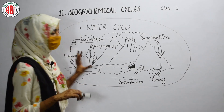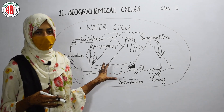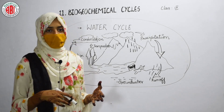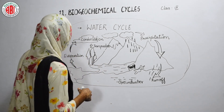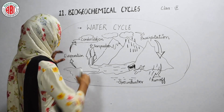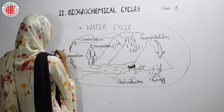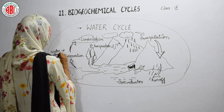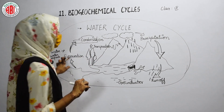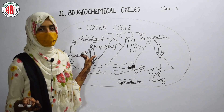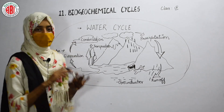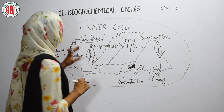The first step in the water cycle is evaporation. Water present in different water bodies — such as streams, ponds, rivers, or any other water bodies — evaporates in the form of water vapor into the atmosphere. That means water changes into water vapor due to sunlight. This process of changing water into water vapor is called evaporation, which we have already studied in our lower classes.